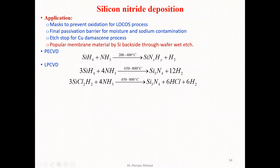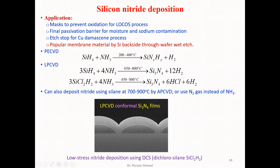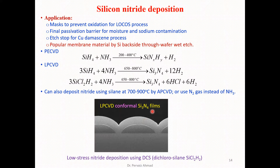Here you can see a typical deposited thin film — a conformal silicon nitride film deposited by LPCVD. LPCVD can also deposit nitride using dichlorosilane at 700 to 900 degrees centigrade, or nitrogen gas can be used instead of ammonia as the nitrogen source, since at sufficient temperature nitrogen decomposes into atomic nitrogen to react with silicon.